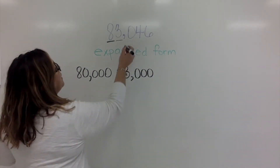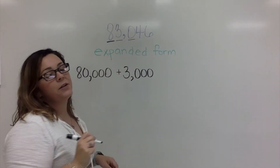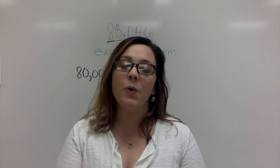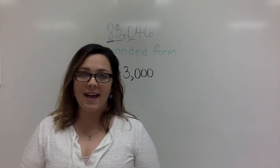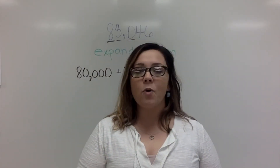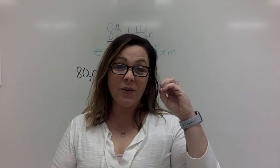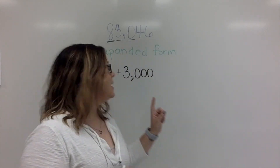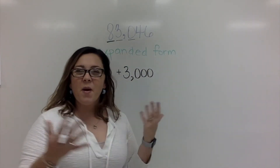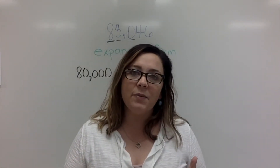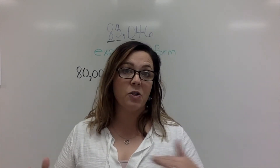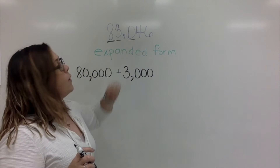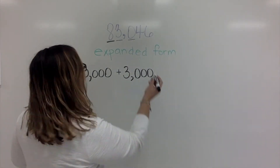Moving on, my next digit is a 0. Zeros are very important — they're there as a placeholder and we need them. However, we do not need to include them in expanded form, because anything plus zero is going to give you that same number. So we don't have to include it in our expanded form — we're just going to skip right over that zero.